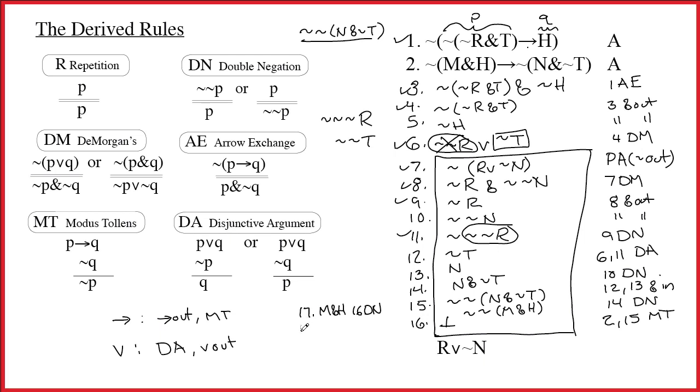Now that I have M and H, I can break that up and get M and H by 17 ampersand out. And now I finally have a contradiction because there's 19 is H and 5 is tilde H. And so here on line 20, I'll go ahead and put it in the bottom of this box. H ampersand tilde H by 5 19 ampersand in. And now I can be done.